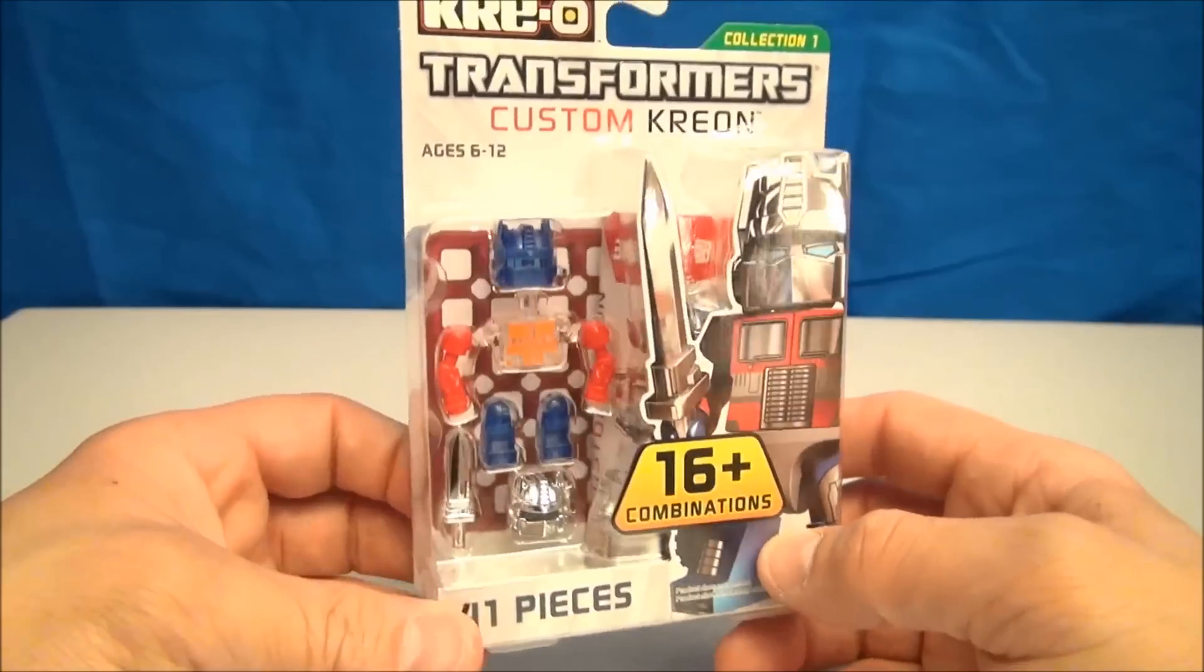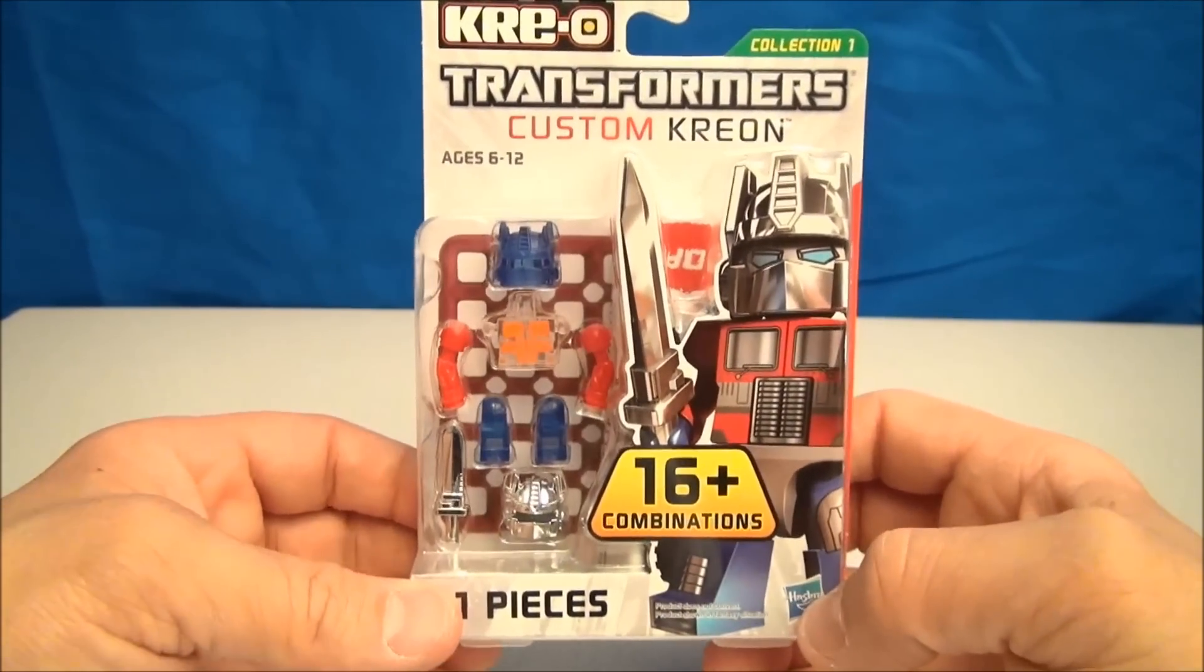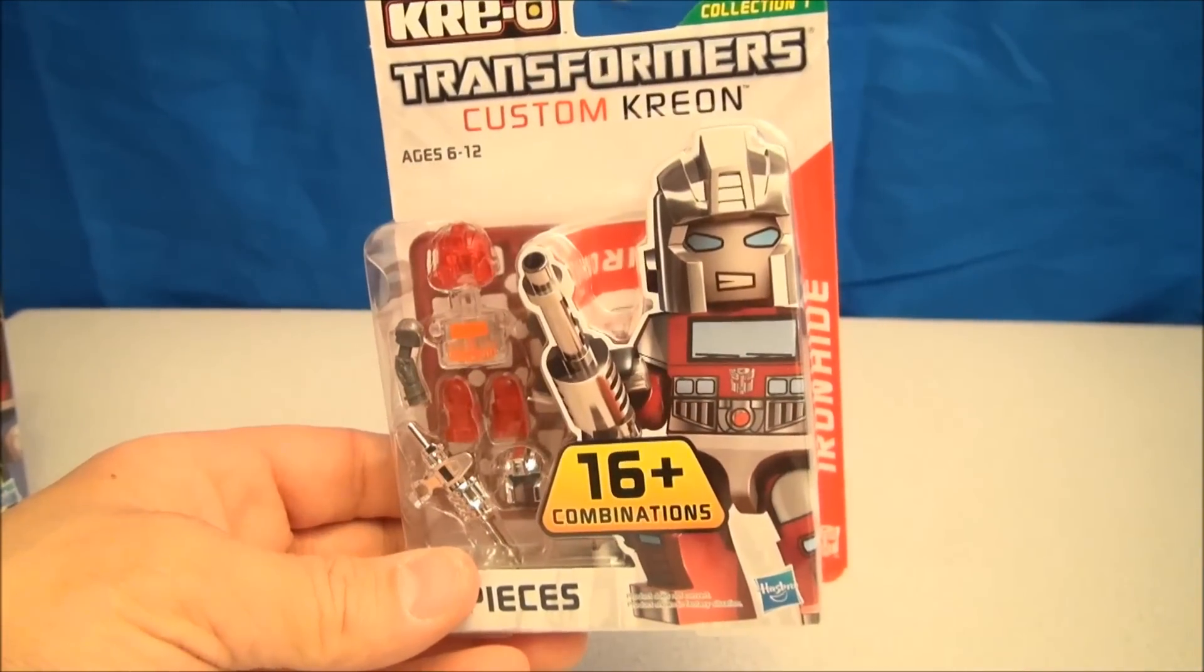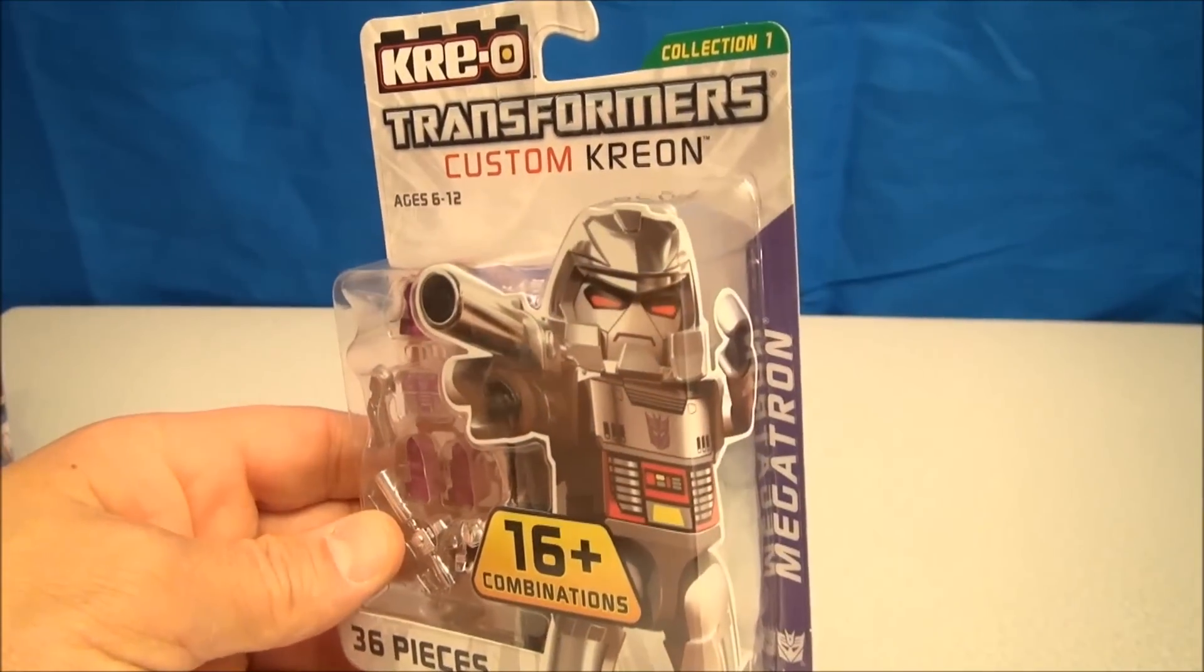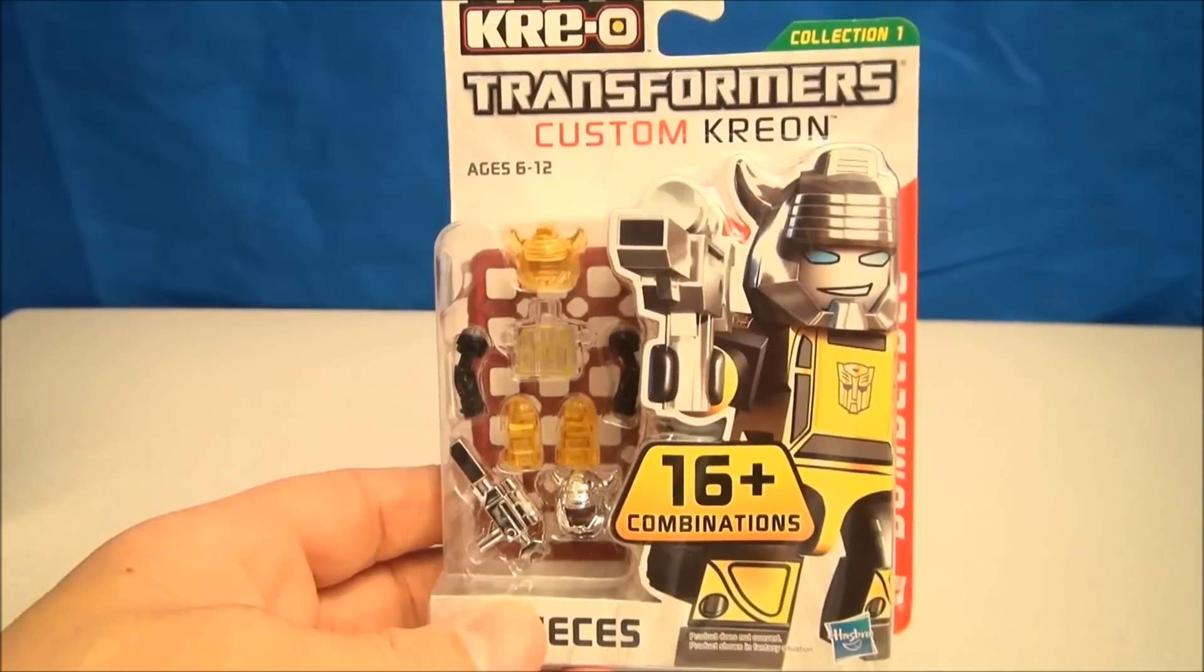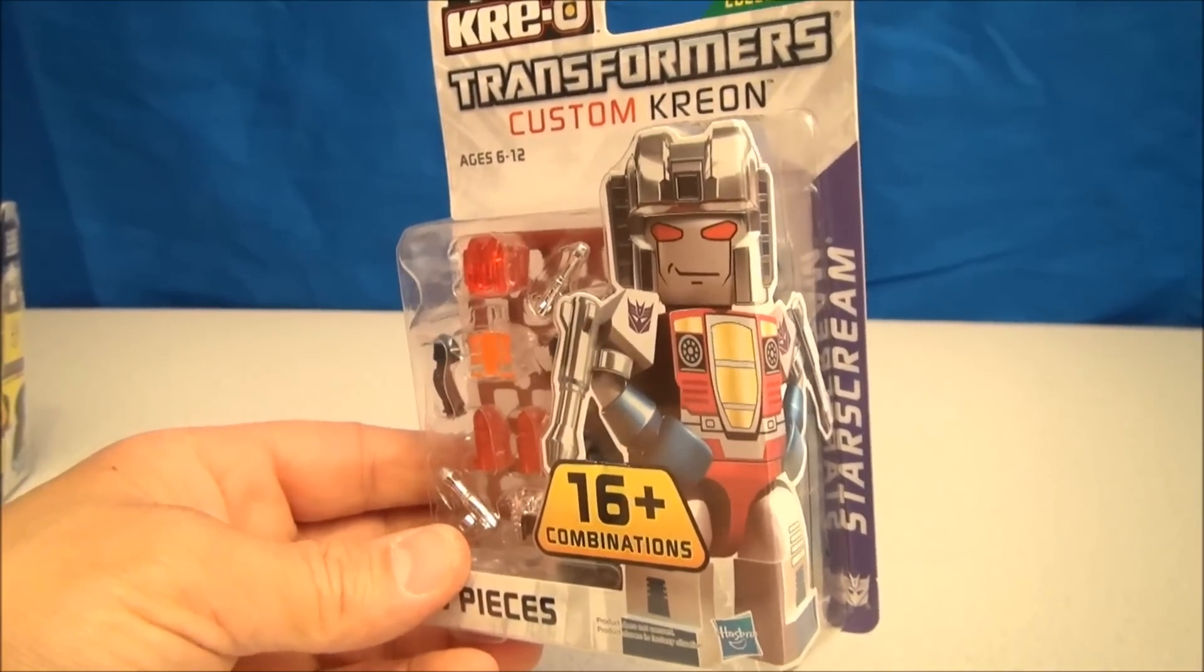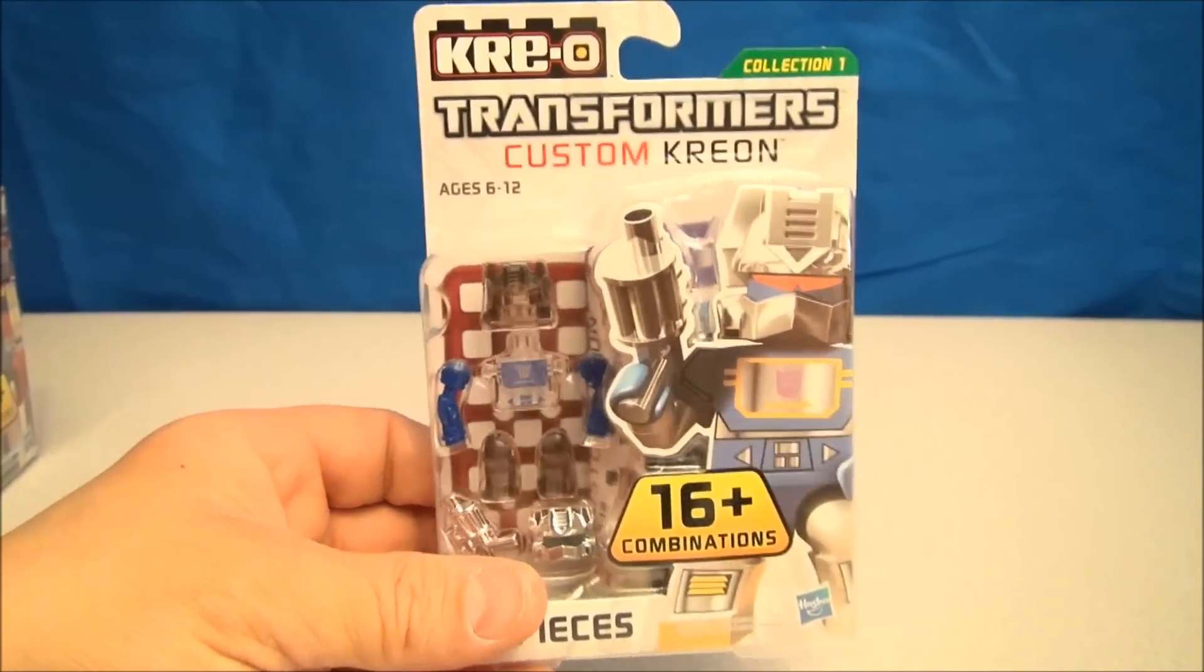Here is Optimus and let's look at the rest of the custom line. In addition to Optimus, we have Ironhide, Megatron, Bumblebee, Starscream, and Soundwave.